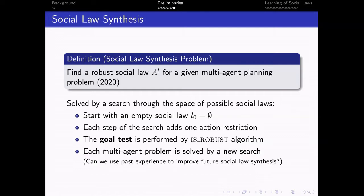And each step of the search, we add another action restriction until we find a robust social law that is verified by IS-ROBUST algorithm. Of course, each multi-agent problem is solved by a new search. And this raises a question. Can we use past experience to improve future social law synthesis? Or maybe can we use expert knowledge to improve social law synthesis?